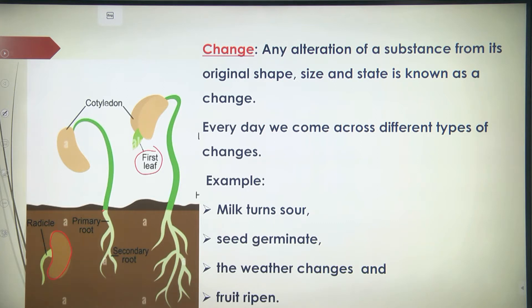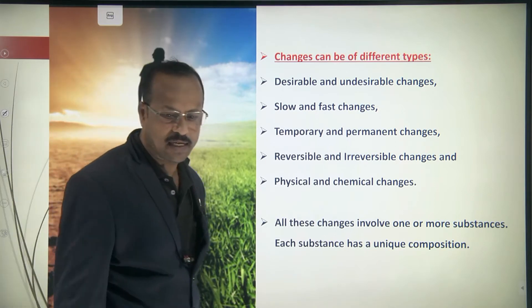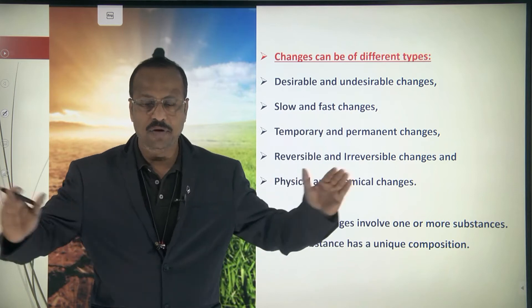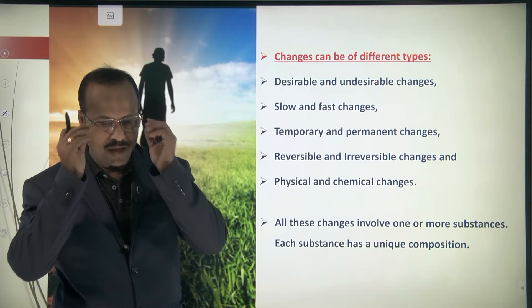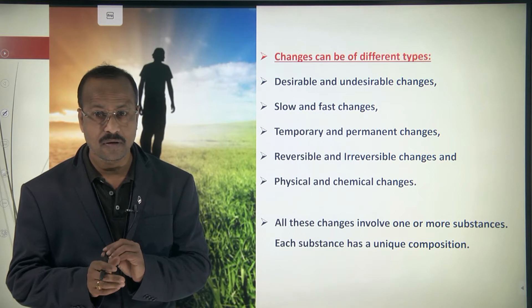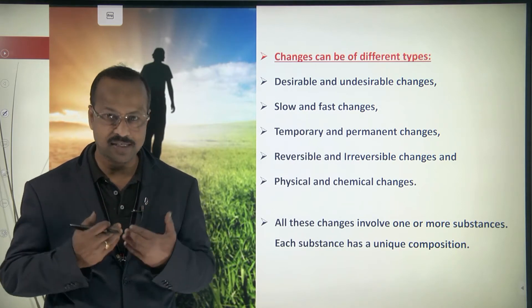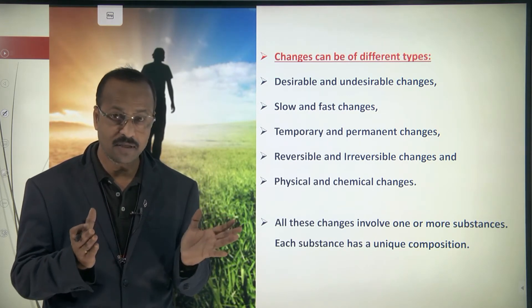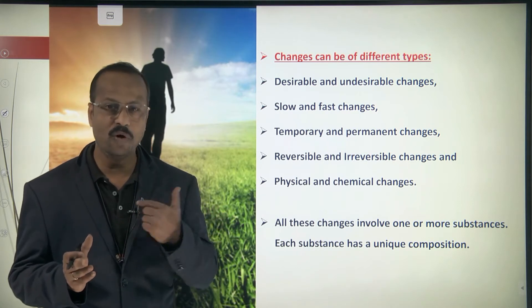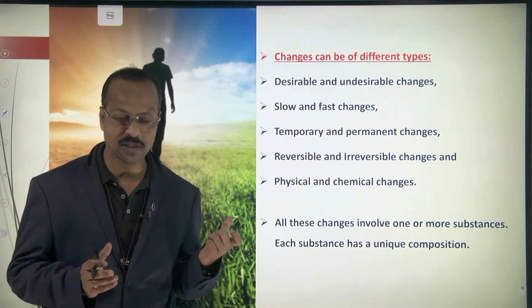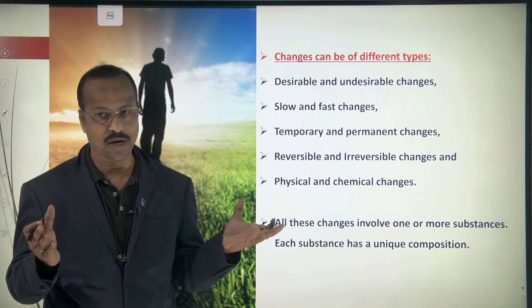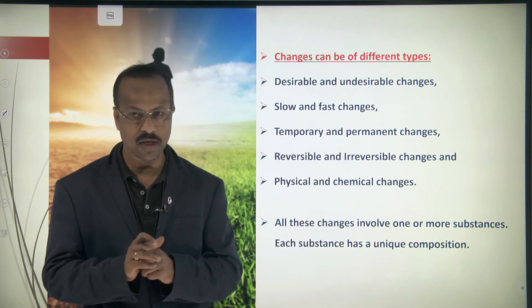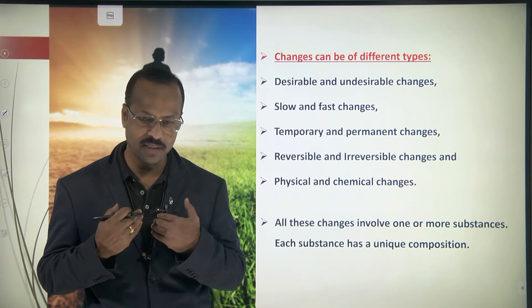The changes around us can be categorized. Some are desirable and some are undesirable. Desirable changes are the ones we want and that are useful to us. For example, if you add a little curd to milk it becomes curd — that is desirable, we want it and eat it. Undesirable changes are ones we do not want, like milk becoming sour if left unboiled — that is undesirable and useless to us.